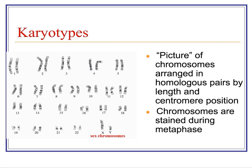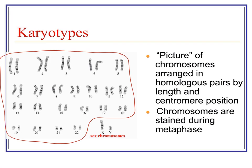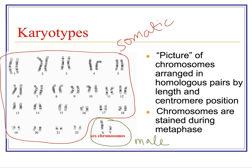We can see here we have our 22 pairs of what we call somatic chromosomes, which are the chromosomes always found in homologous pairs. And then down here we have our sex chromosomes. This would be the karyotype of a male, because he has both an X and a Y chromosome. We can see how the Y chromosome is a lot smaller than the X chromosome.